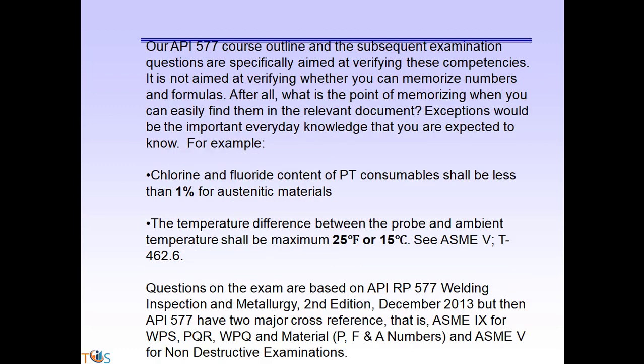The course outline and examination questions are aimed at verifying competencies, not memorization of numbers and formulas. Exceptions include important everyday knowledge such as: fluoride content of PT consumables shall be less than 1% for austenitic materials, or the temperature difference between the probe and ambient temperature shall be a maximum of 25°F or 15°C. Exam questions are based on API RP 577 Second Edition December 2013, with two major cross-references: ASME Section 9 for WPS, PQR, WPQ, material P, F, and A numbers, and ASME Section 5 for non-destructive examination.